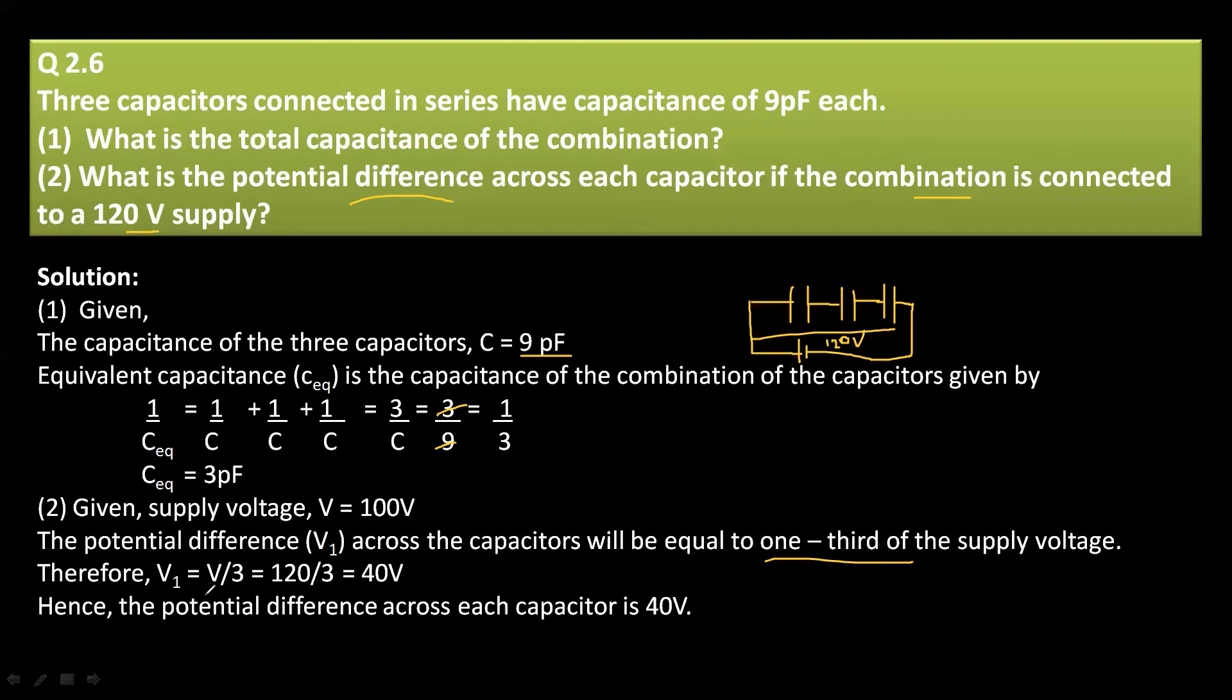So V1 is equal to V by 3 because there are 3 capacitors. So we will divide the voltage into 3 parts. 120 by 3 that is 40 volt. Hence the potential difference across each capacitor is 40 volt.